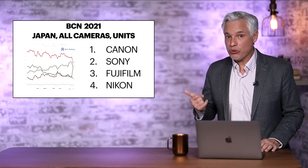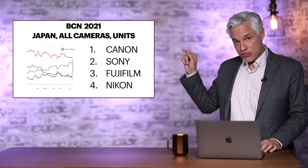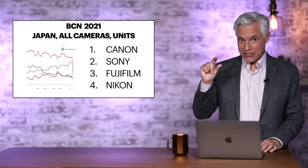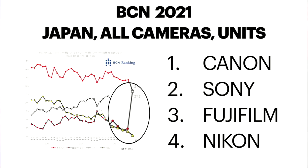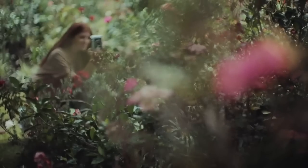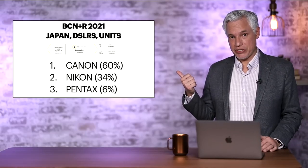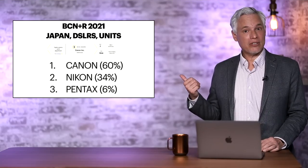Another popular source of information that gets cherry-picked a lot is BCN. BCN only polls Japanese retailers. So we can see the ranking is Canon, Sony, Fujifilm, and Nikon. If you look at this chart here, you can see Fujifilm took a huge leap up in the last year, thanks to the popularity of Instax instant film cameras. BCN carves the data up in many useful ways. Here we see the rankings for DSLRs sold in Japan. This is the only time you're going to see Pentax ranking for anything. They still get 6% of Japanese DSLR sales. Sony doesn't rank here at all.